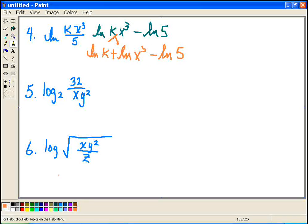And now, if I notice, there's one more thing I can do to expand this, and that is get rid of my exponent. So I have an x cubed here, so in order to get rid of that, I can just move it to the front. So my final expansion is the natural log of k, plus 3 natural log of x, minus the natural log of 5. And that would be my answer.